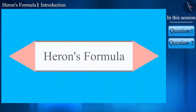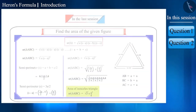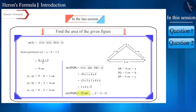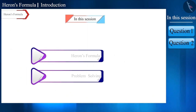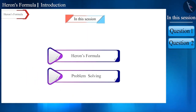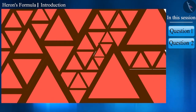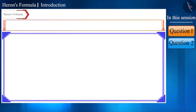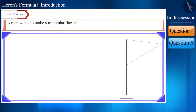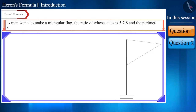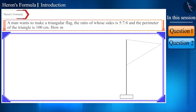Hello friends, welcome to this video on Heron's formula. In the previous video we solved some questions based on Heron's formula. In this session we will solve some more questions based on it. Let's start with this question: a man wants to make a triangular flag, the ratio of whose sides is 5:7:8, and the perimeter of the triangle is 100 centimeters. How much cloth will go into making such a flag?